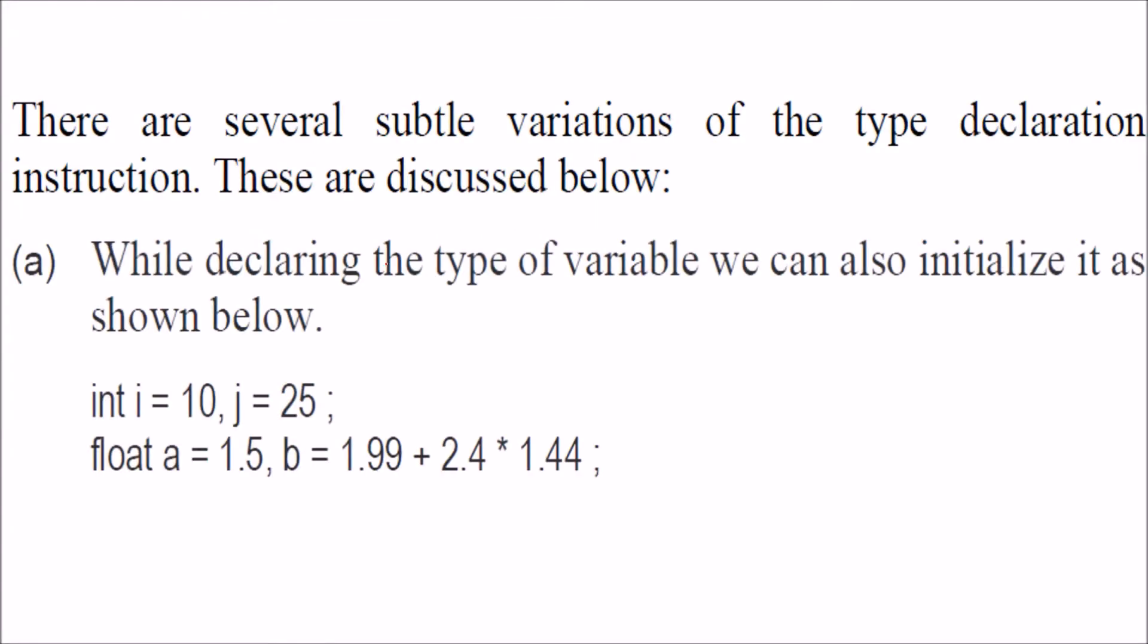There can be certain variations while declaring the type of variable. We can also initialize it like int i=10, j=25. You can declare and initialize any number of values. For float, a=1.5, you can also have an expression here.